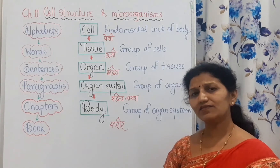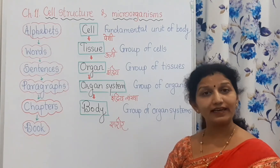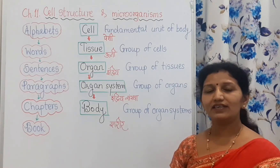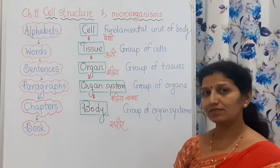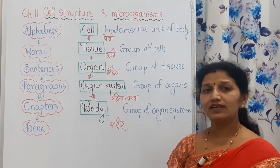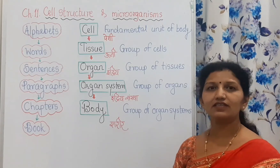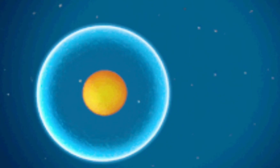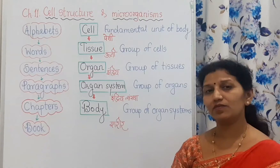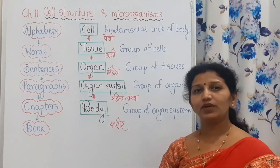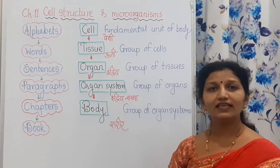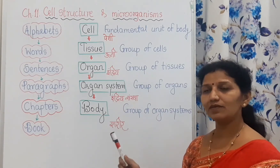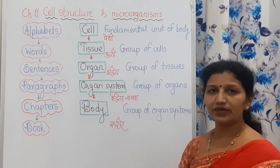Children, last year we studied the different characteristics of living things like growth, movement, cellular structure, definite lifespan, reproduction, respiration, and excretion. Among them, cellular structure is a very important characteristic because we have studied that the cell is the structural, functional, and fundamental unit of our body.